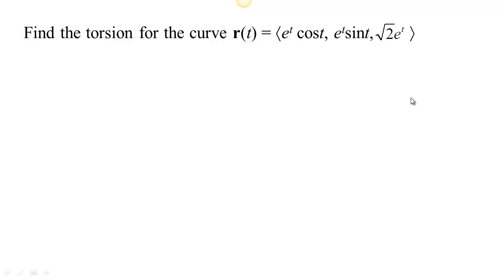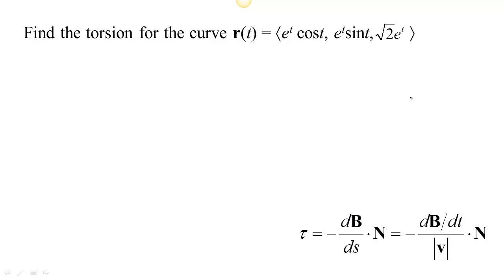We're supposed to find the torsion of this curve. One way to do that is to use our formula: the torsion is minus dB/ds dot N. Calculating dB/ds directly would be hard, so we'll calculate dB/dt and divide by the speed. We'll need to calculate T to get N, and with T cross N we can find B. Then we find the derivative of B with respect to t, divide by the speed, dot it with N, and we'll have the torsion. We'll also come back and do this with the other formula.